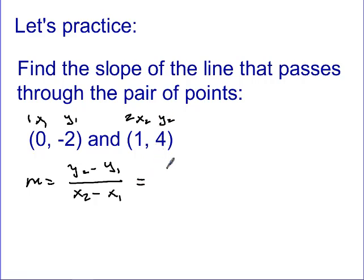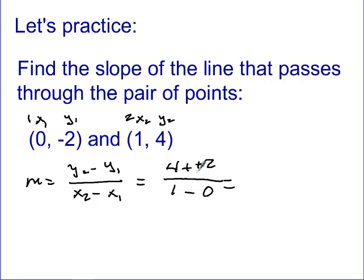Our formula is M = (Y2 − Y1) / (X2 − X1). Now we plug in those points. We've got Y2 = 4, Y1 = negative 2, X2 = 1, and X1 = 0. On the top, I change the minus to plus and change Y1 to its opposite: 4 + 2 = 6. On the bottom, 1 minus 0 = 1. So our slope is 6.